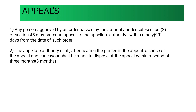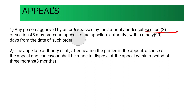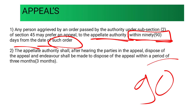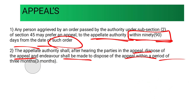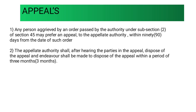If a certain claim has been given to an employee and he is aggrieved or not satisfied with the decision, then he may go for appeal. The Code on Wages 2019 also talks about this. Any person aggrieved by an order passed by the authority under sub-section 2 of section 45 may appeal to the appellate authority within 90 days — this is important — within 90 days from the date of such order. The appellate authority shall, after hearing the parties, dispose of the appeal within a period of three months.